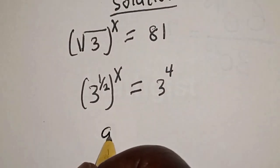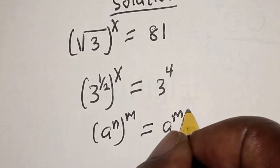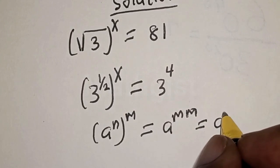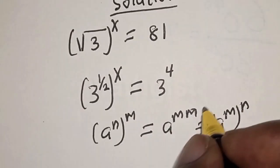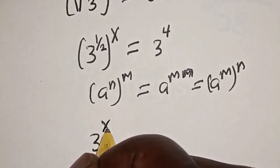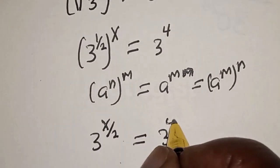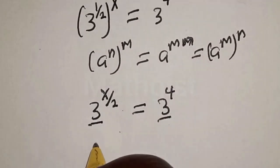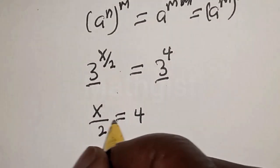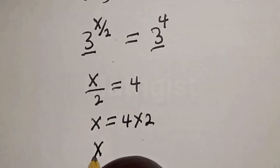Now remember this rule: if you have a raised to power n, raised to power m, this is equal to a raised to power m times n. Applying this, 3 raised to power 1 over 2, raised to power x, becomes 3 raised to power x over 2, equal to 3 raised to power 4. Since they have the same base 3, then x over 2 is equal to 4. Cross multiplying, x is equal to 4 multiplied by 2, so x is equal to 8.